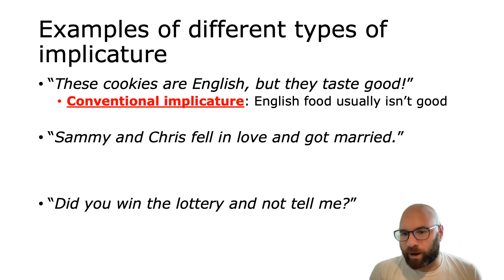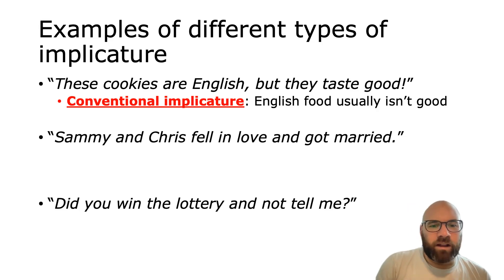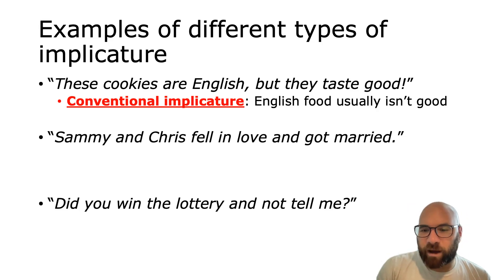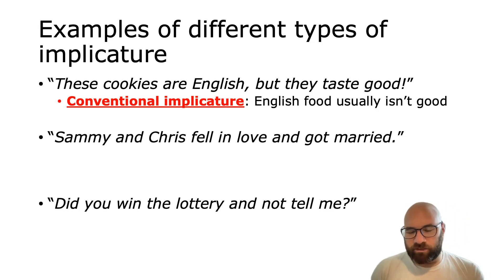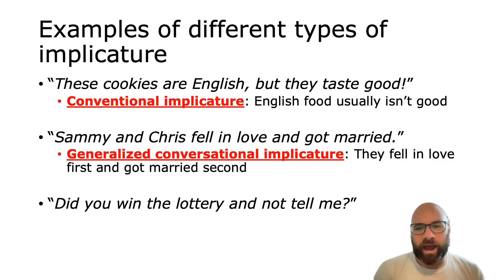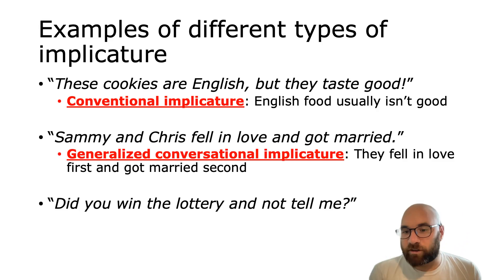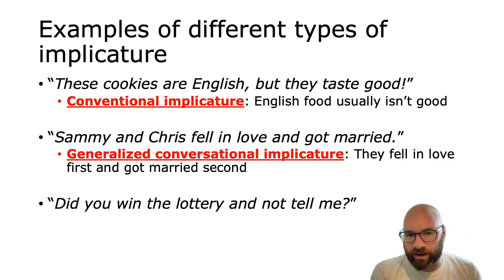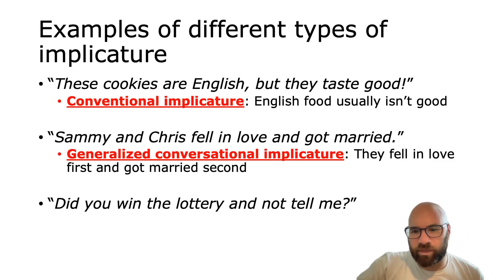Now let's look at the second sentence. If we have an utterance like 'Sammy and Chris fell in love and got married,' literally this just means those two things — they fell in love and they got married. But it also has an additional interpretation: they fell in love first and got married second, so they did things in that order. This is what's called a conversational implicature, and more specifically a generalized conversational implicature.